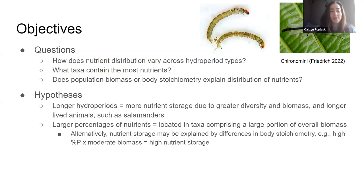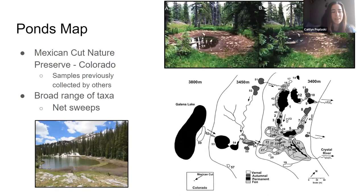My hypothesis included that the longer hydroperiods would have larger quantities of nutrients overall because they house more diversity and larger biomass. Things that live in permanent ponds can live there longer, grow larger, and possibly contribute more nutrients, such as salamanders. I also thought that the taxa contributing the most nutrients would likely have high biomass, but that some taxa with lower biomass could still contribute a decent amount due to high percentages of that nutrient in their body. This is a map showing the numerous ponds of various hydroperiods from which many samples of various taxa were taken. The samples were collected via net sweeps in the Mexican Cut Nature Preserve in Colorado.